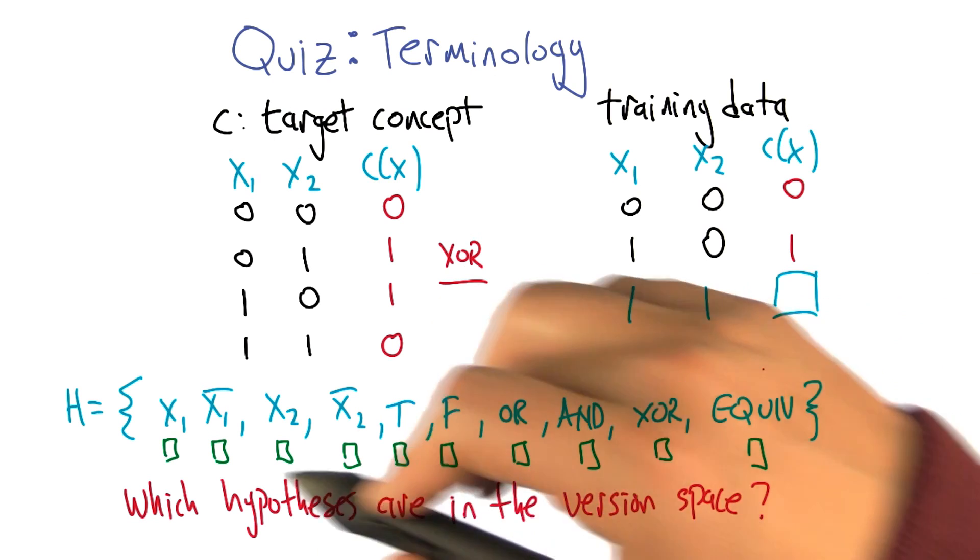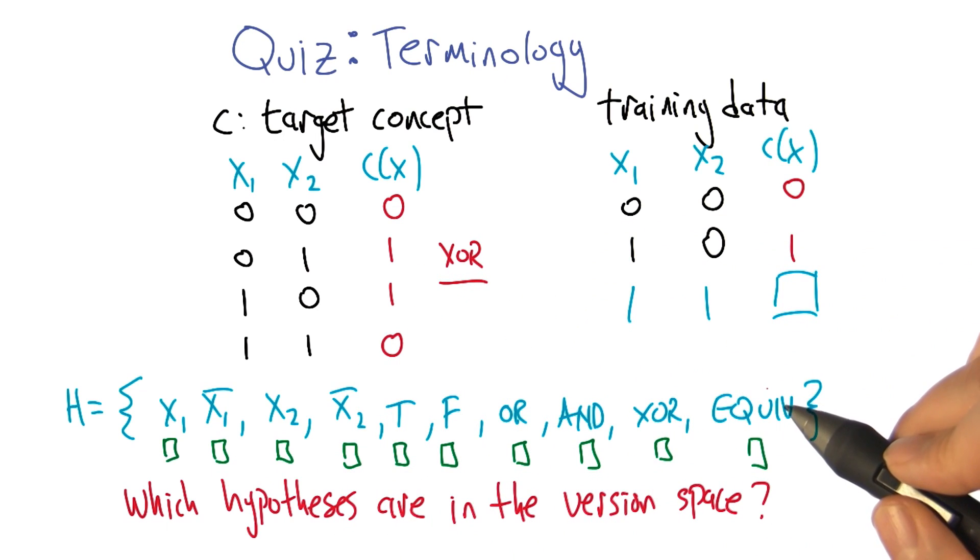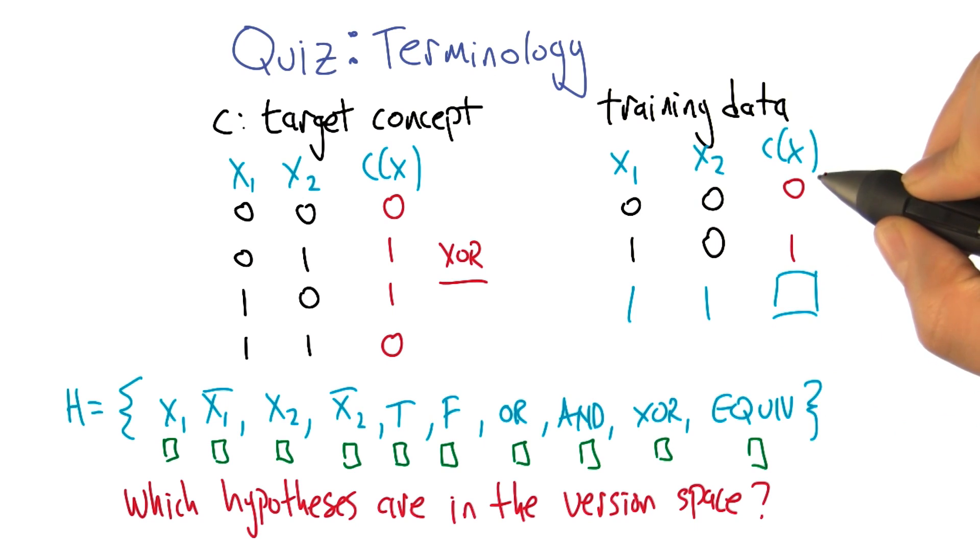And what I'd like you to do is some of these are in the version space and some of them are not for this training set that I marked here. So can you check off which ones are in the version space? I think I can. Awesome. Let's do it.